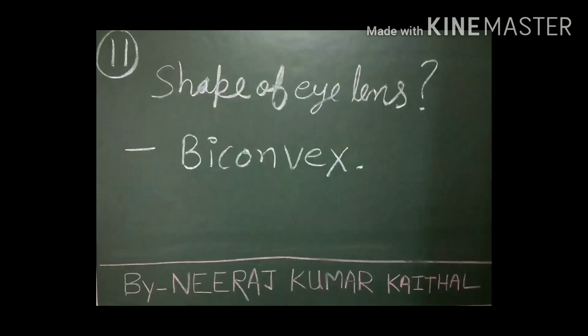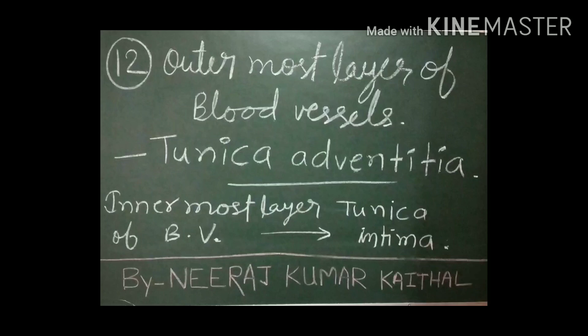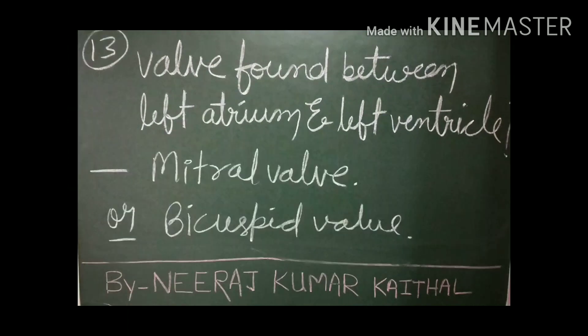Question number twelve: the outermost layer of a blood vessel is known as tunica adventitia, and the innermost layer is tunica intima. Which valve is found between the left atrium and left ventricle? The answer is the mitral valve. The mitral valve is found between the left atrium and left ventricle of the heart. The mitral valve is also known as the bicuspid valve.